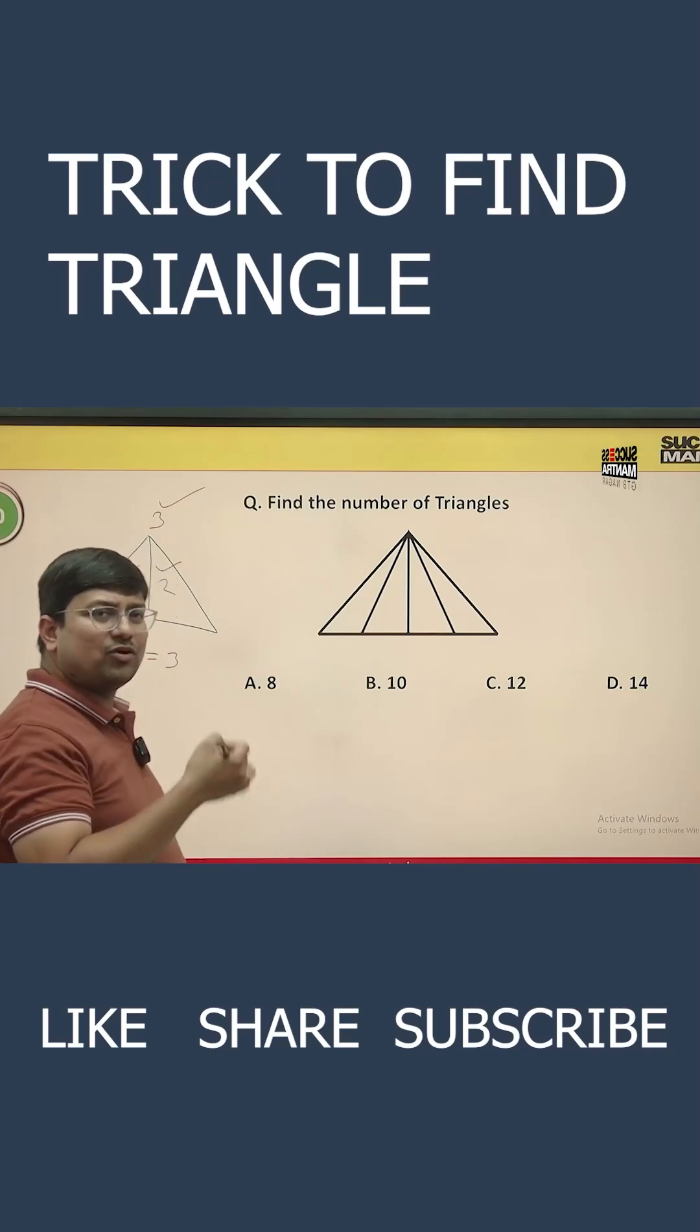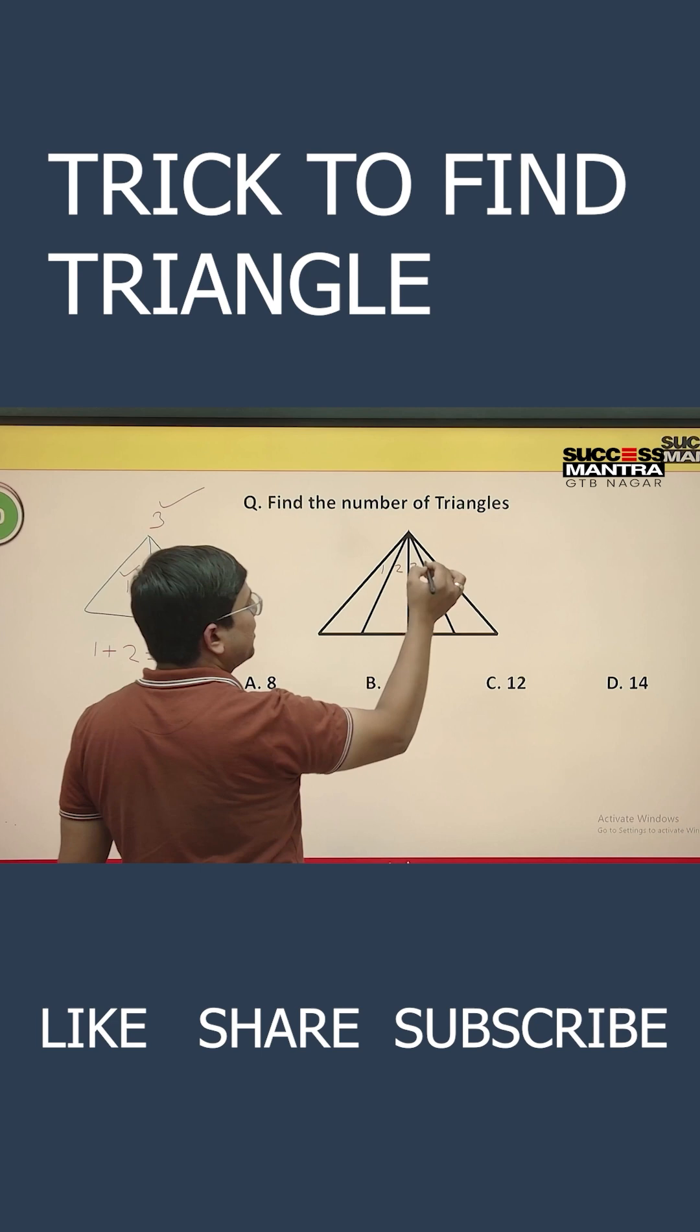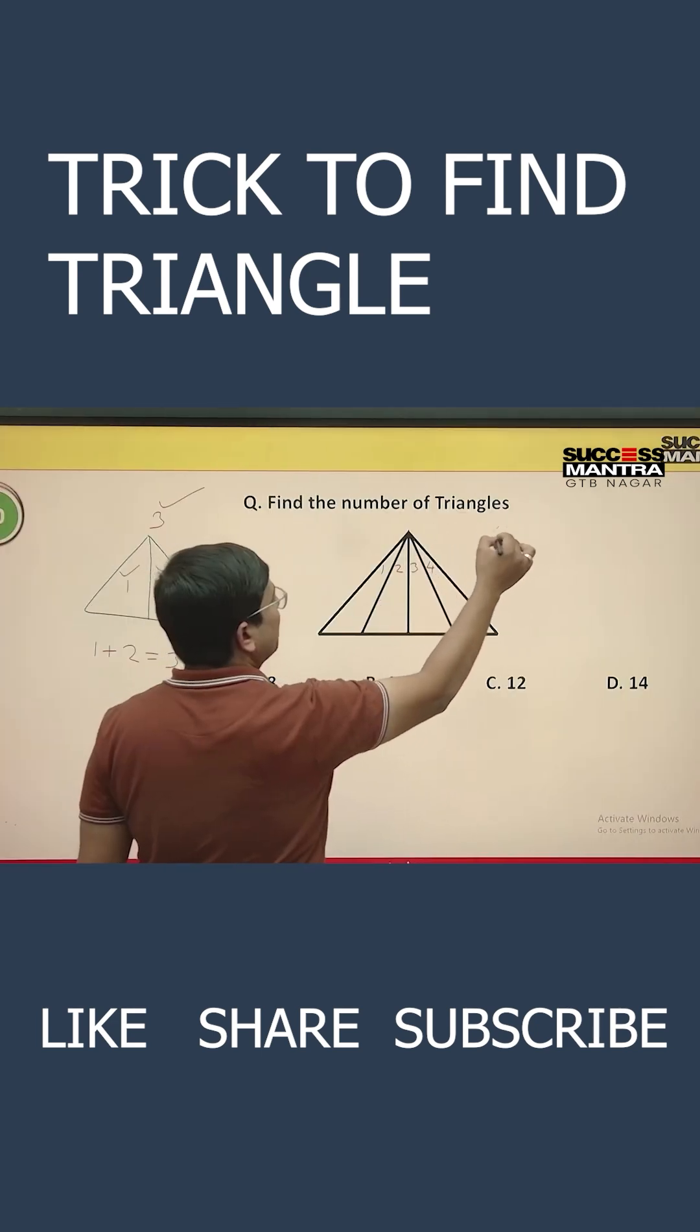Then what is the basic method? If you count it, you will see this is the first triangle, second triangle, third triangle and four triangles. So you are already getting four.